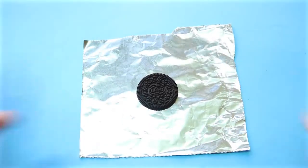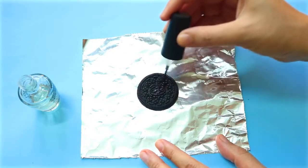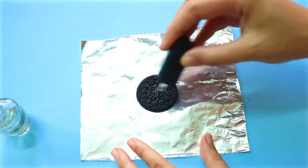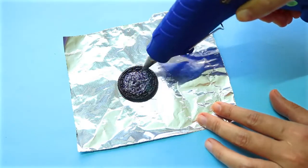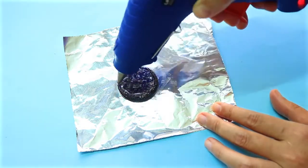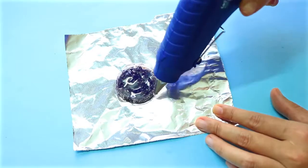Now put it on a piece of aluminum foil and then coat it with some clear nail polish. Once the nail polish has dried, put the hot glue on top of your Oreo. And make sure you cover the round edge too.